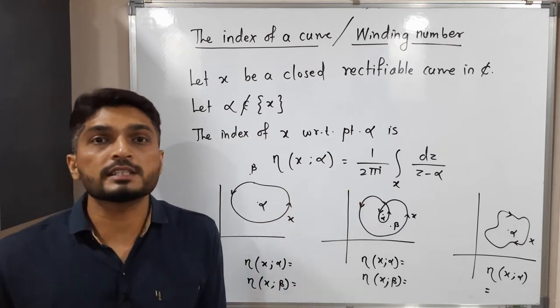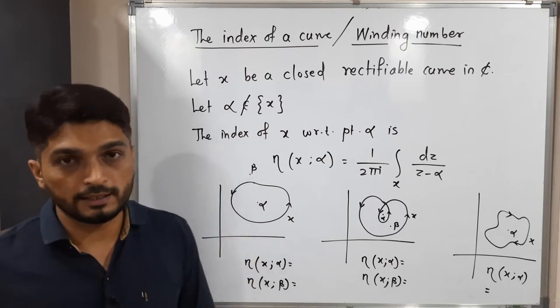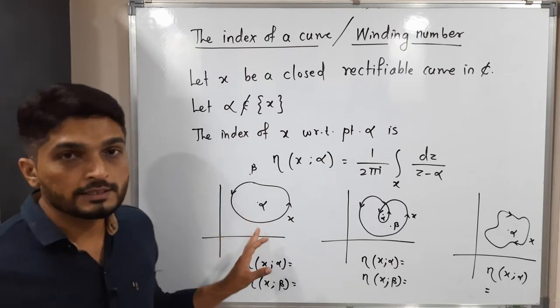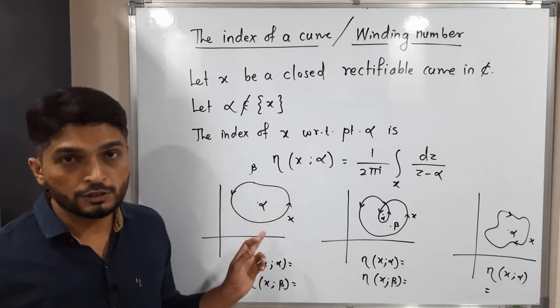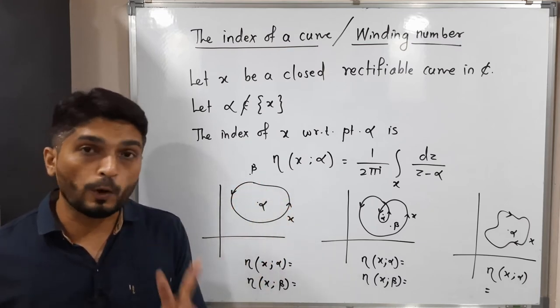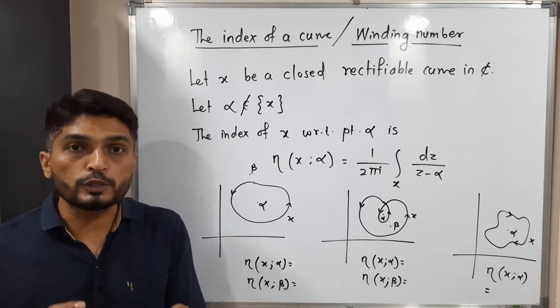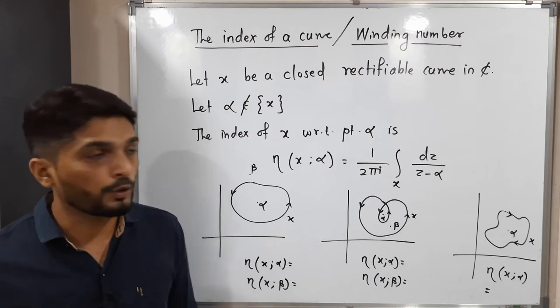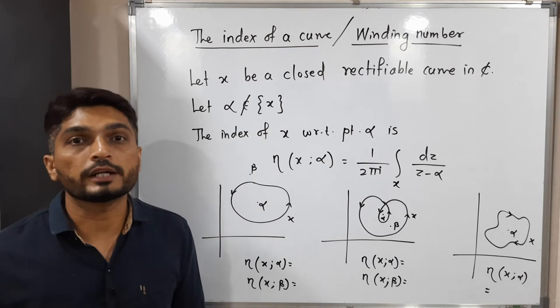Let us discuss this first example. In this diagram you can easily see x is a closed curve in an anti-clockwise direction. We have two points, two complex numbers alpha and beta. The condition is those points should not be on the curve. Yes, these points are not on the curve. One point lies inside the curve, point beta lies outside the curve.